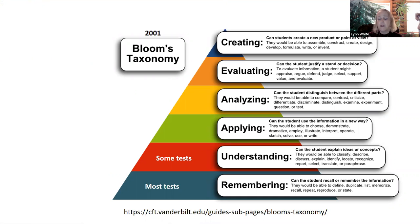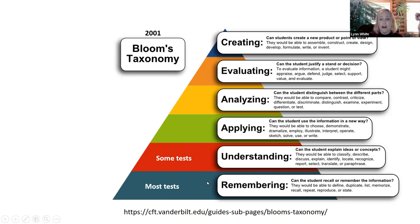Bloom's Taxonomy is a way of conceptualizing learning outcomes and learning goals. The pyramid is set up so that learning outcomes requiring very little higher order cognitive thinking are at the lowest rungs, and as you move up through the pyramid, those at the top require the most higher order cognitive skills and thinking.